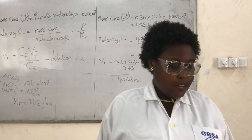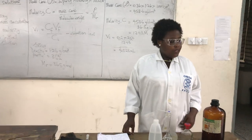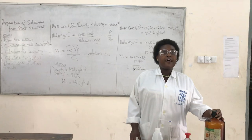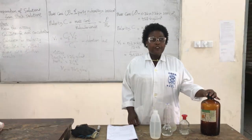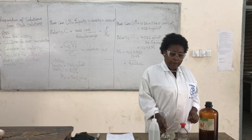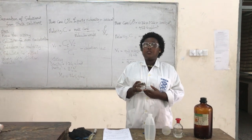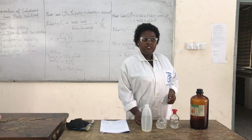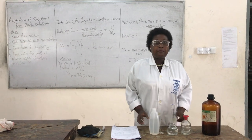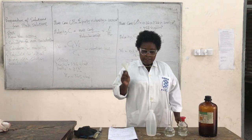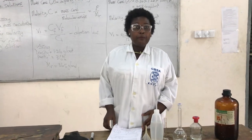Let me take you through the materials you're going to need for today's practical. I have here a stock solution of hydrochloric acid (HCl), a volumetric flask filled with water, a measuring cylinder, a wash bottle containing distilled water, and a funnel.